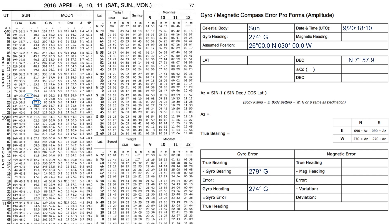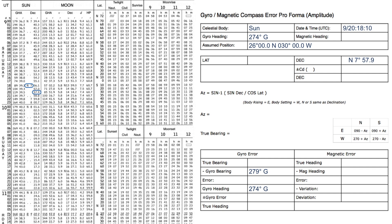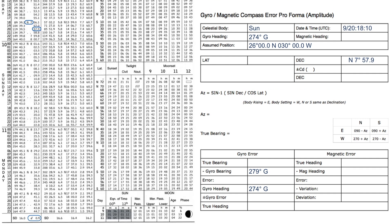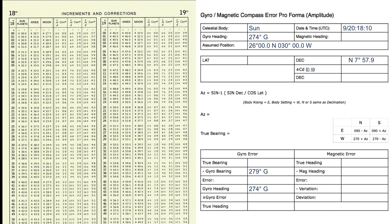We observe that the declination between 20 hundred hours and 21 hundred hours is increasing. We also have a correction to apply which we obtain by looking at the d value on the bottom of the column — in this case 0.9. Turning to the yellow pages in the back of the almanac titled Corrections and Increments, and turning to the 18 minute page, we read off the correction value as 0.3, which as declination was increasing we add, giving our corrected declination of North 7 degrees 58.2.